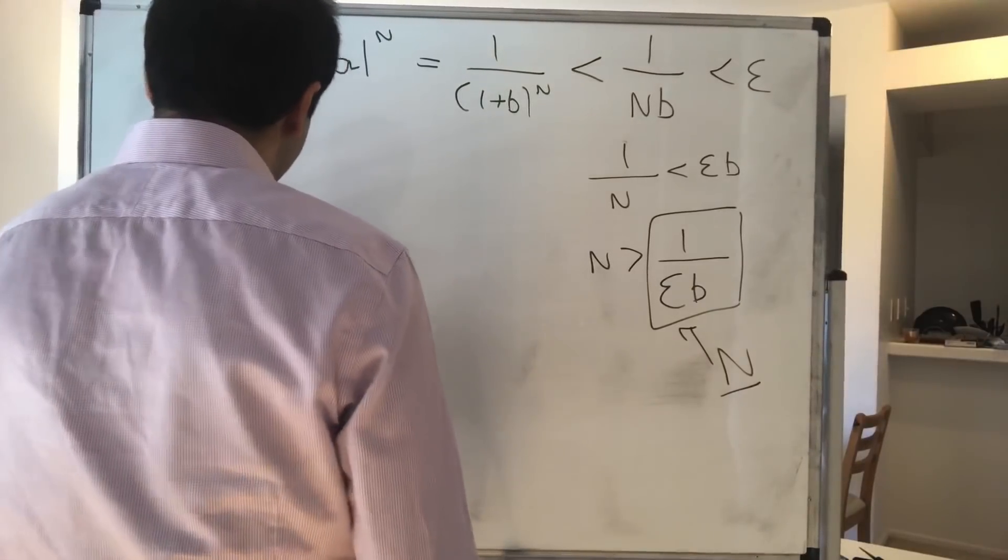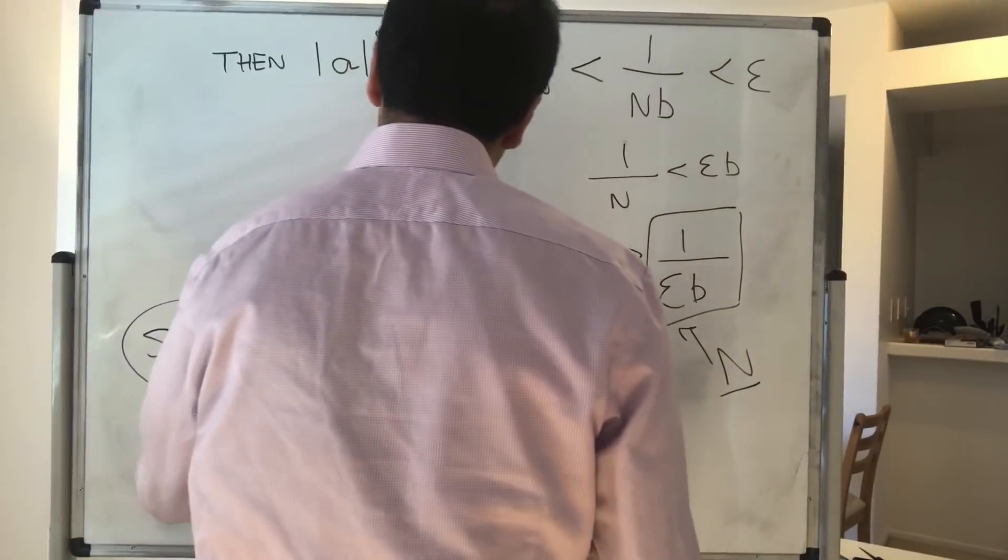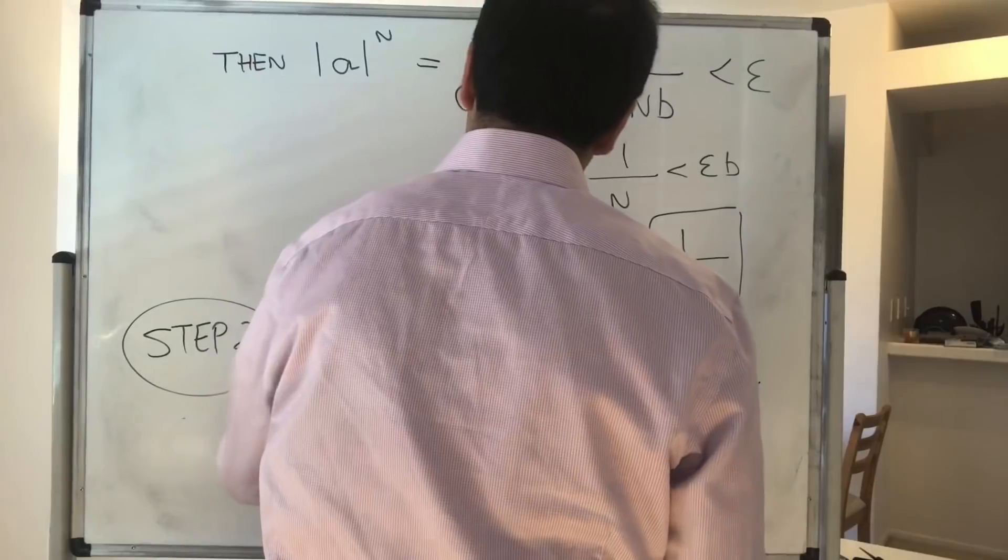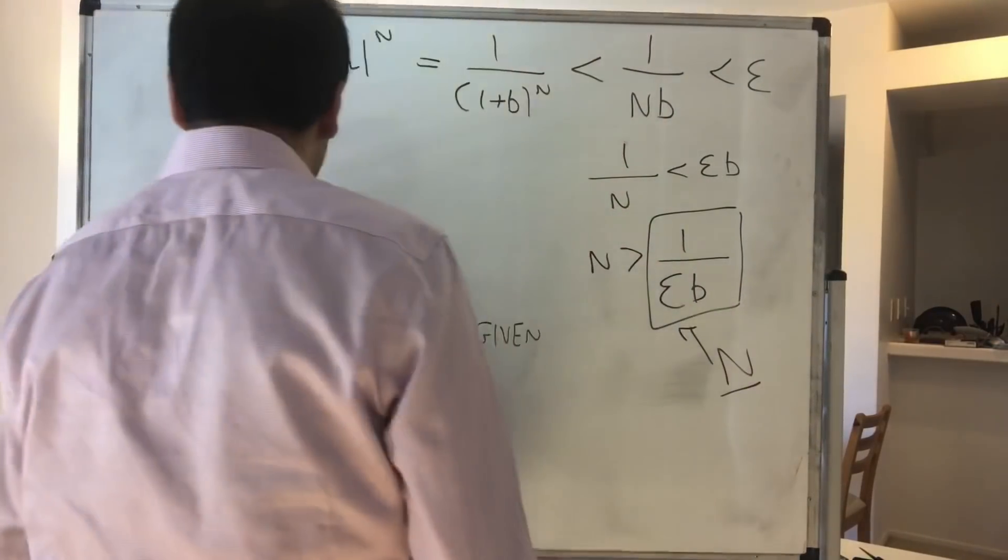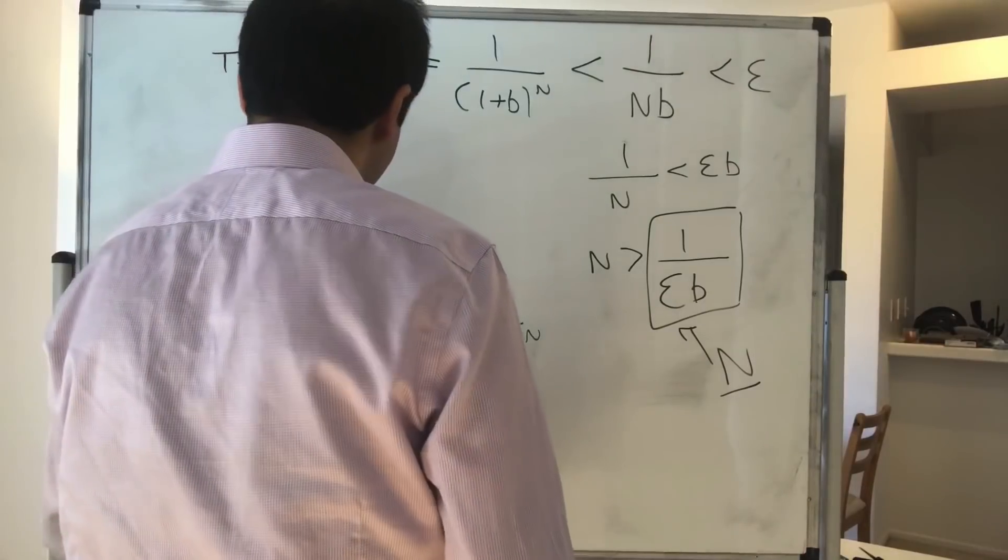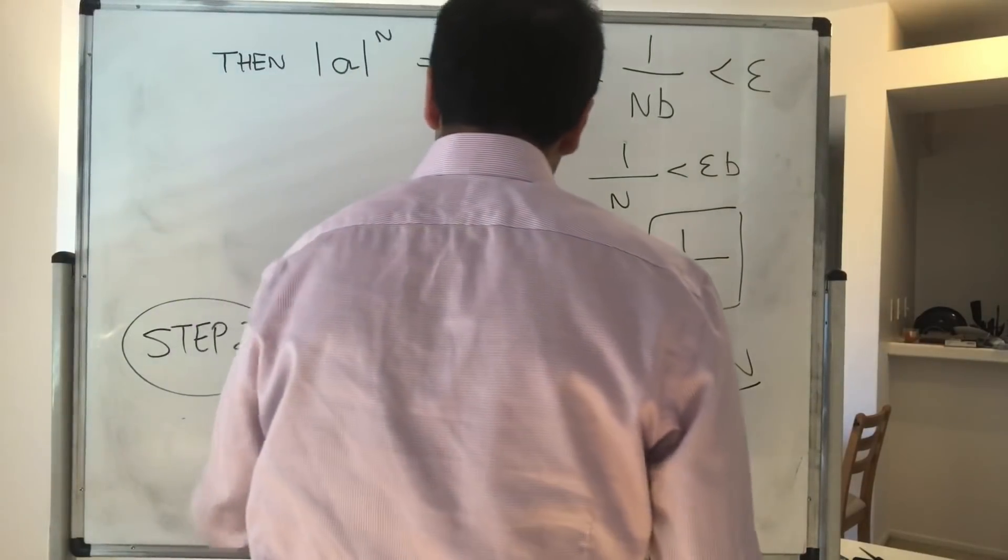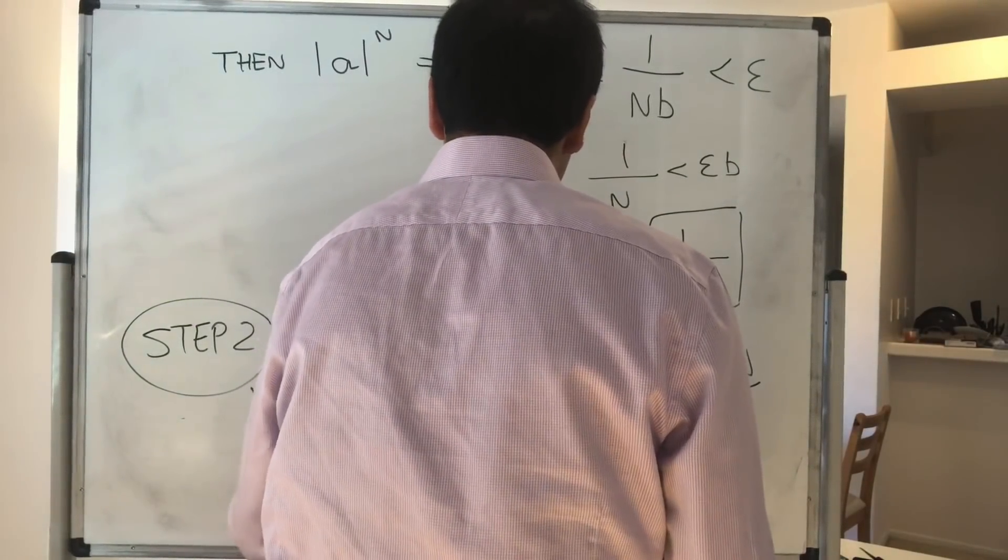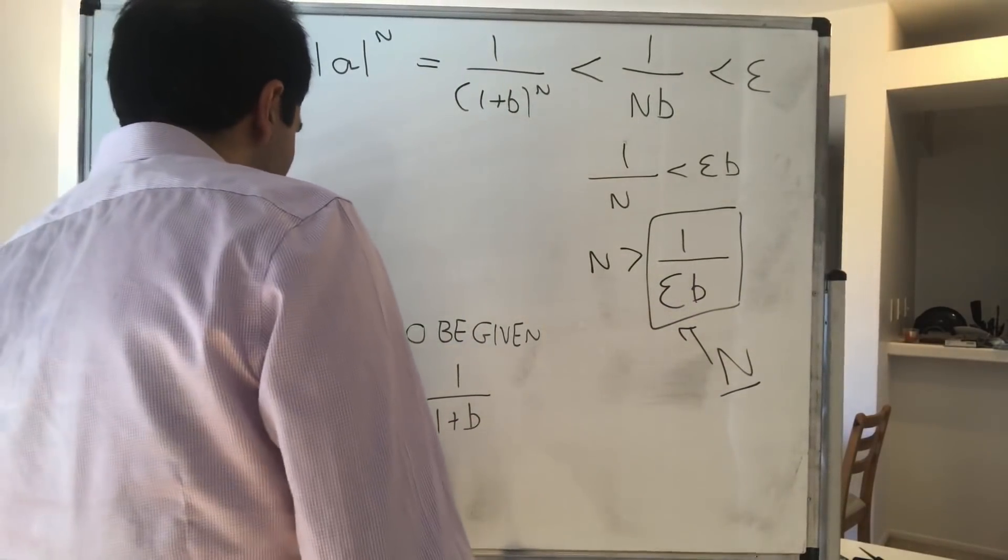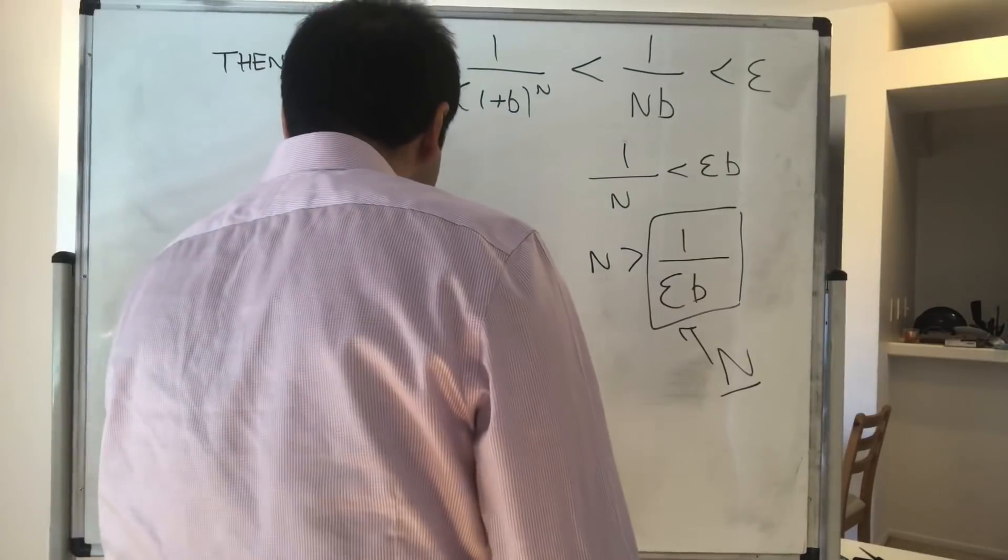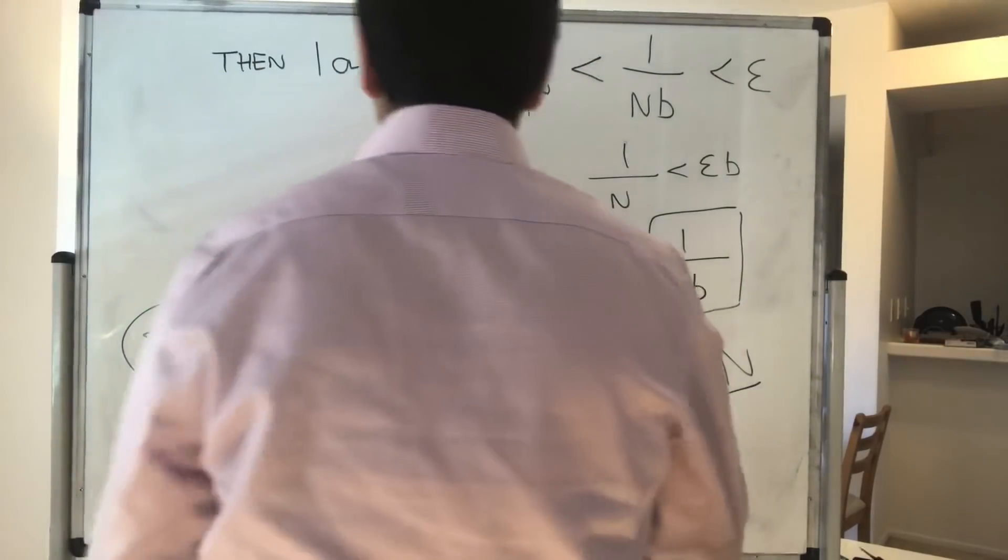let epsilon be given, and then write absolute value of a as 1 over 1 plus b, and let capital N to be 1 over epsilon b.